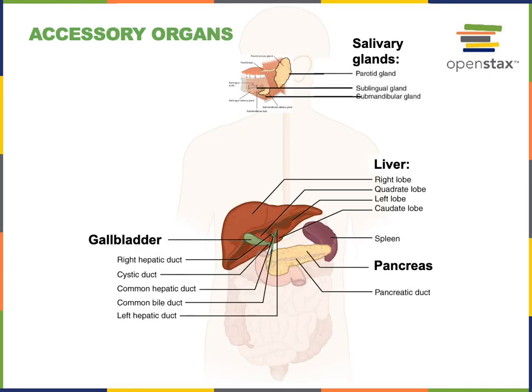The accessory organs of the digestive system include the salivary glands, the liver, the pancreas, and the gallbladder. The salivary glands produce saliva — a watery secretion that helps to lubricate the oral cavity and the bolus during deglutition, and also contains enzymes. The major enzyme in saliva is salivary amylase, which initiates the chemical digestion of carbohydrates.